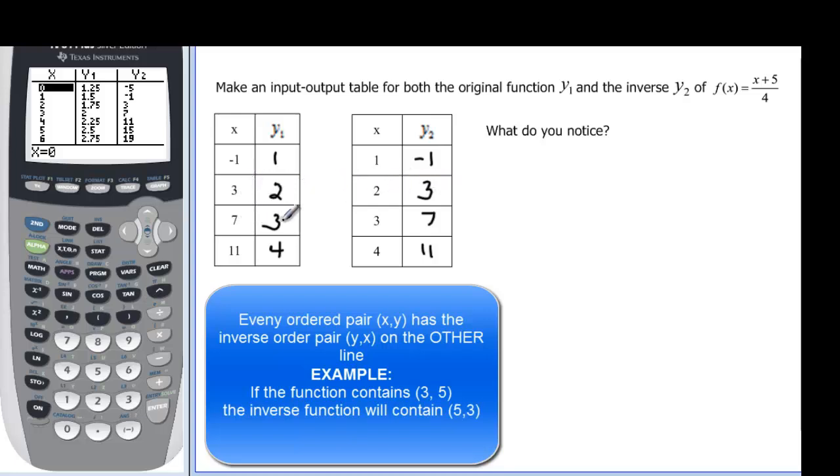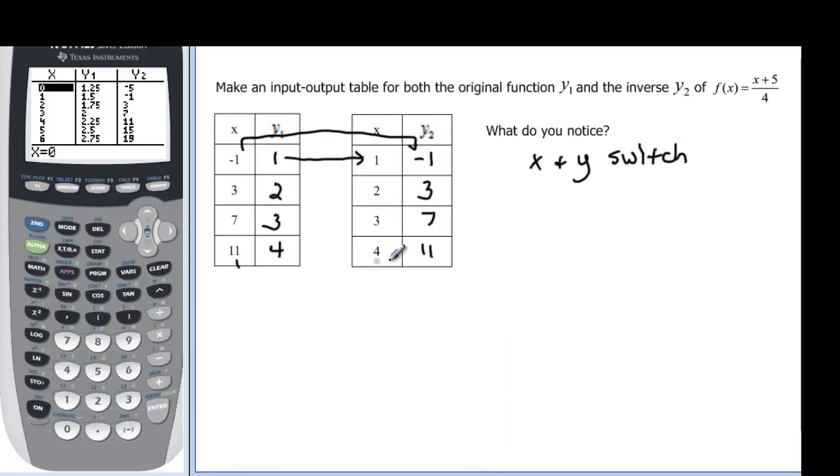This is 3, 2. The inverse function has 2, 3. 7, 3, inverse 3, 7. My function has 11, 4 as an ordered pair. And my inverse function has 4, 11. So what did we notice? The x and y change place. They switch.